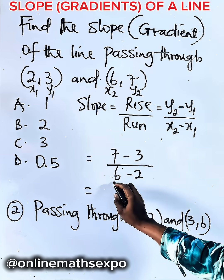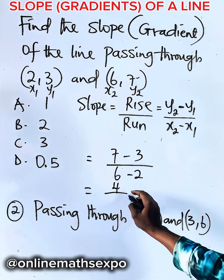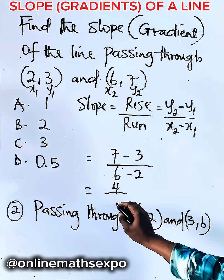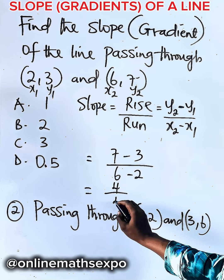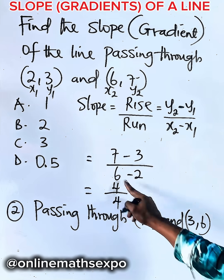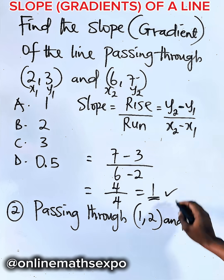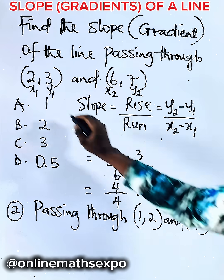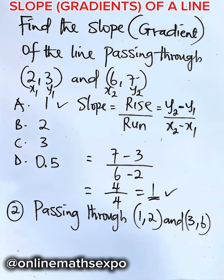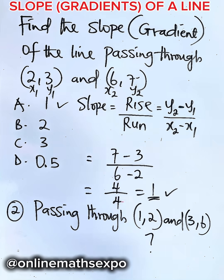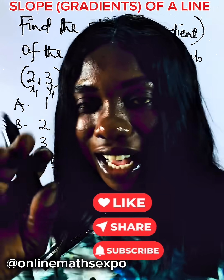Simplifying this gives us 4, and when you subtract the x values it gives us 4 also. Dividing this gives you 1. So our slope is 1. What do you think about this? I hope it helps. Bye.